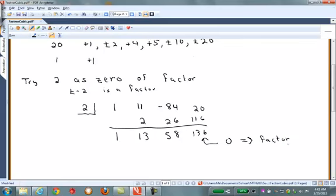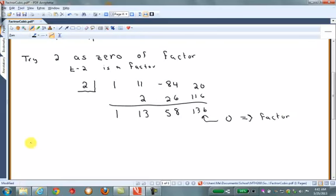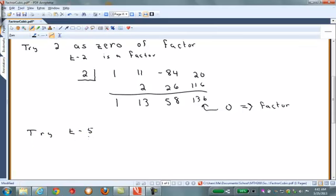Let's try another one. Let's see if t minus 5. Let's see if that's a factor. So, to see if t minus 5 is a factor, we'll remember to use the 0 of this factor. The zero is 5.